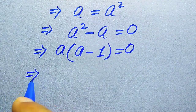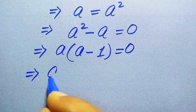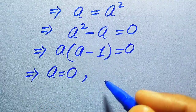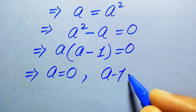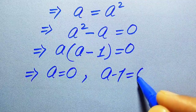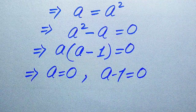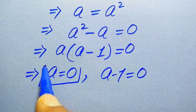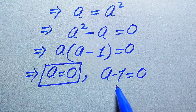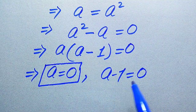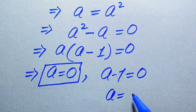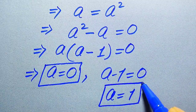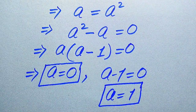Now you see both of these two terms involve A, so we can easily take common A. When we take common A we get A times A minus 1 equals zero. We divide this equation into two cases: the first case gives A equals zero, and the second case gives A minus 1 equals zero, so A equals 1. This is the second root of the given equation.